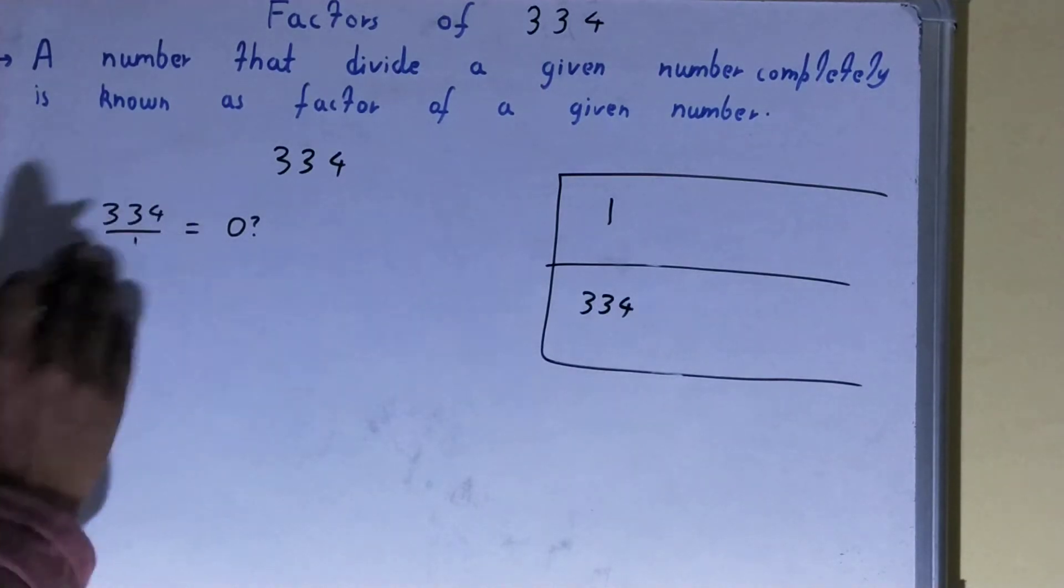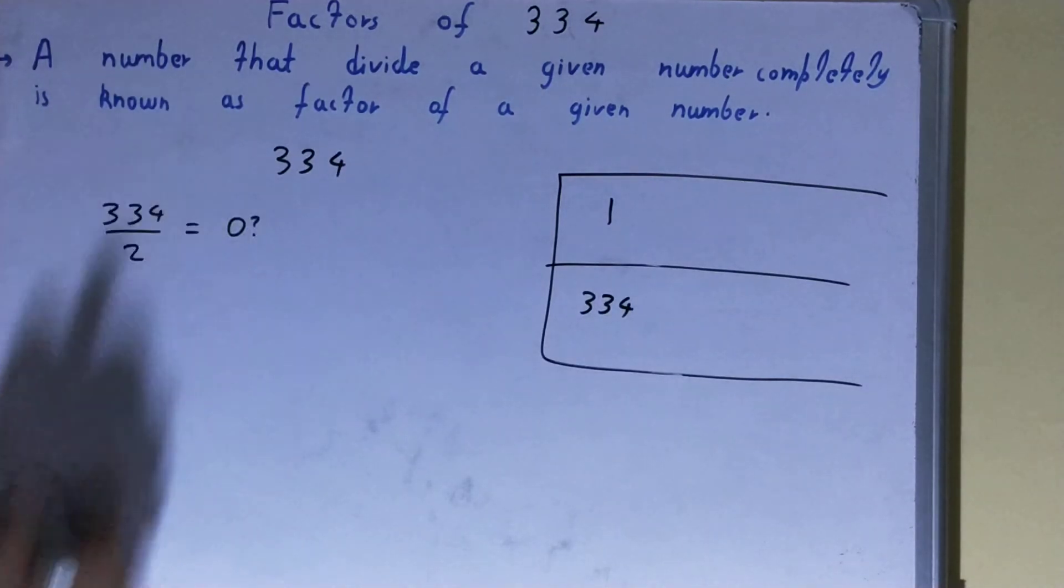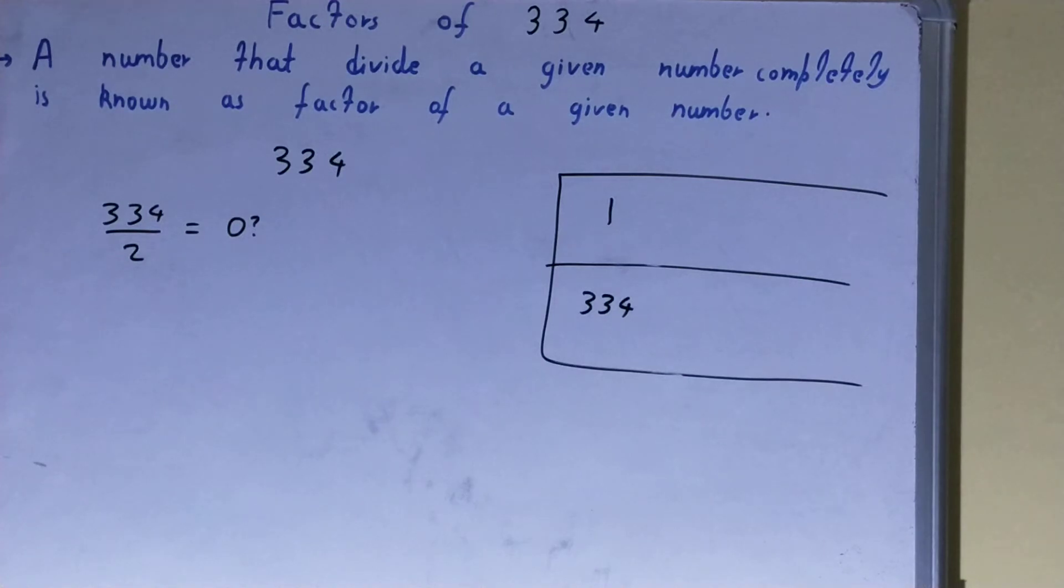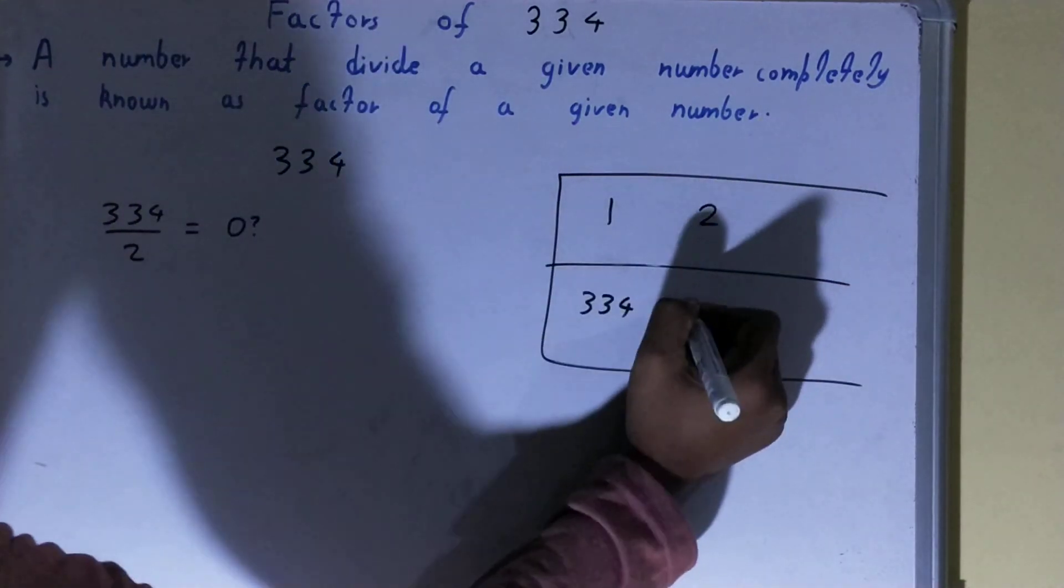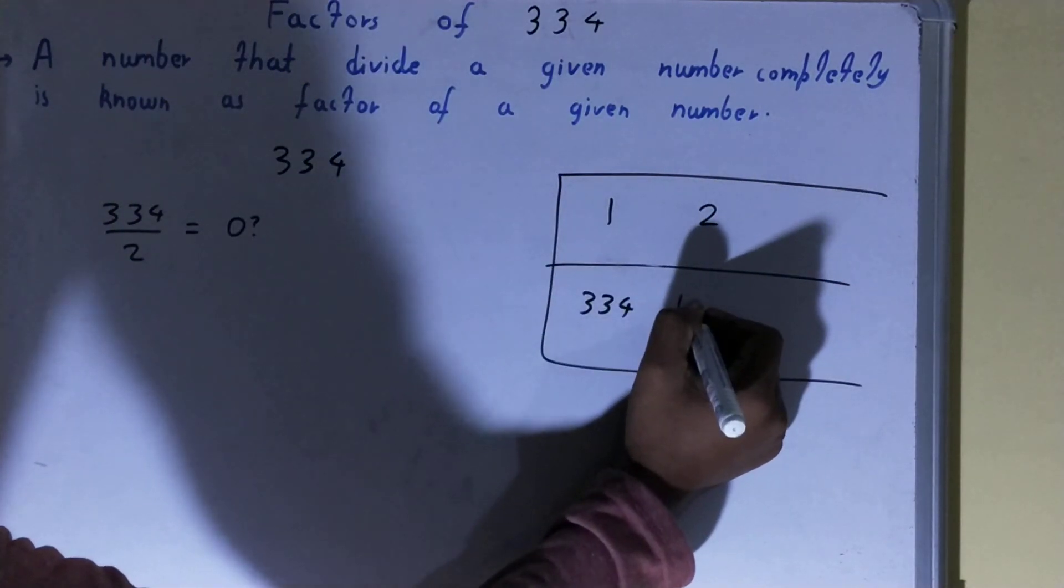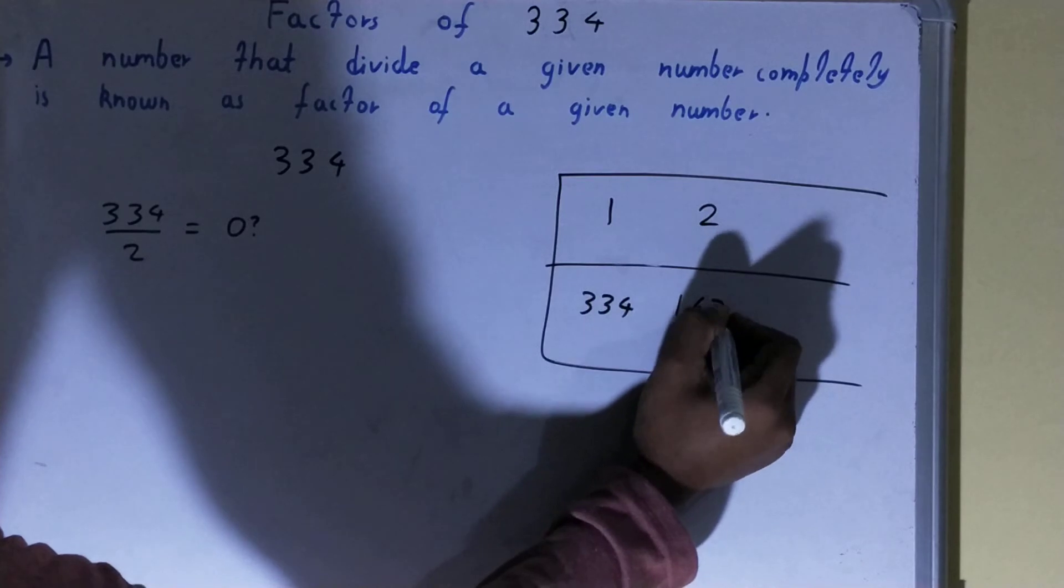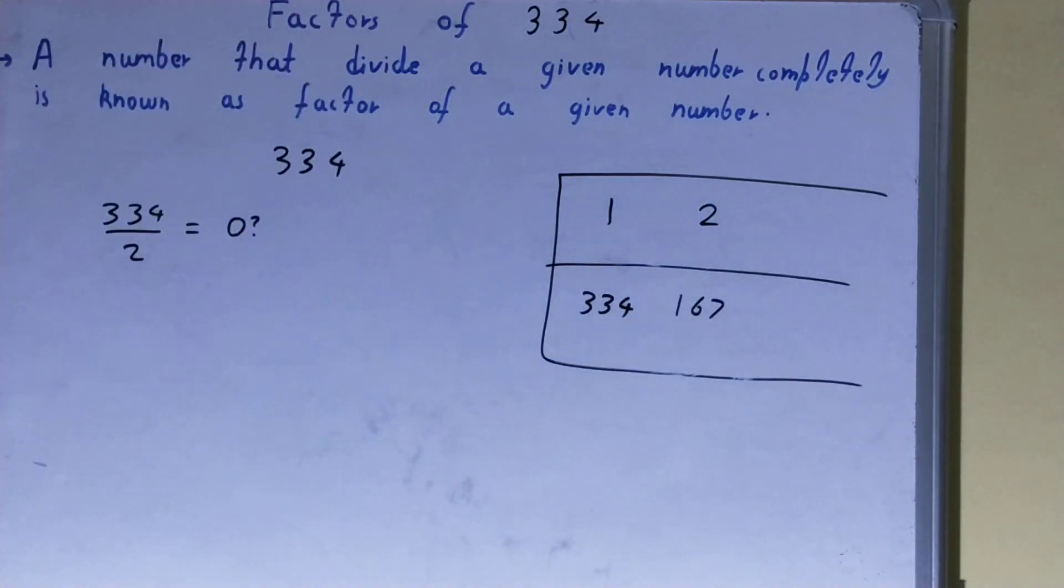Now after 1, we will check with 2. Is the number 334 divisible by 2? The answer is again yes, because 334 is even. So 2 is a factor, and 2 into what times? 2 into 167 times. So 167 will also be the factor.